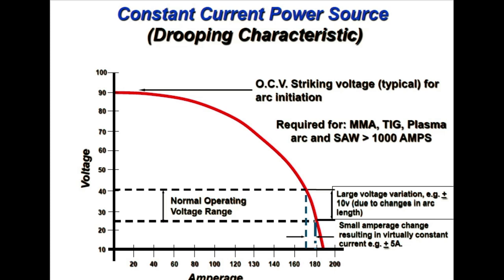This is the constant current power source with drooping characteristic. OCV (open circuit voltage) is the striking voltage, typical for arc ignition. This is the voltage-ampere curve: normal operating voltage, and a large voltage variation of 10 volts due to change in arc length. If arc length changes, the voltage variation can be 30 to 40 volts in that area.